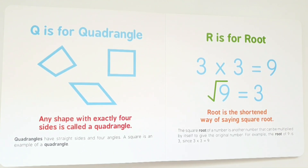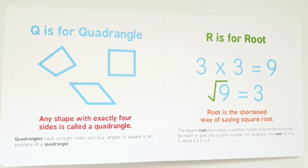R is for root. Root is the shortened way of saying square root. The square root of a number is another number that can be multiplied by itself to give the original number. For example, the root of 9 is 3, since 3 times 3 is 9.